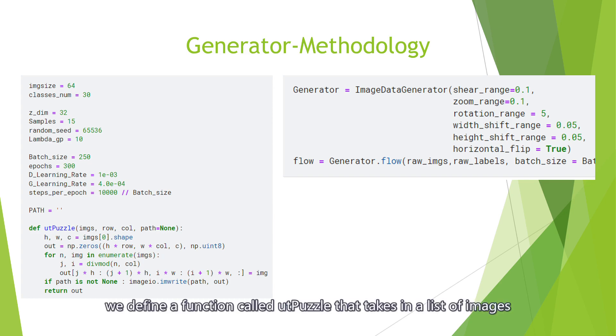We define a function called utPuzzle that takes in a list of images and values for number of rows and columns to use in creating a composite image. Then we use image data generator to generate more images for training.